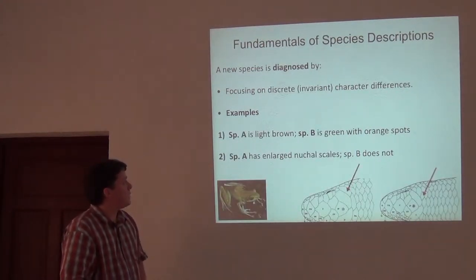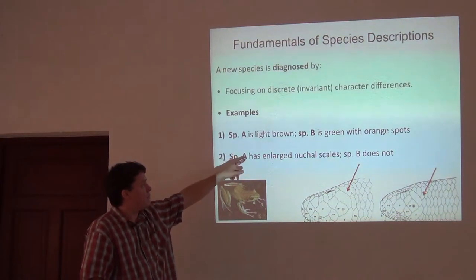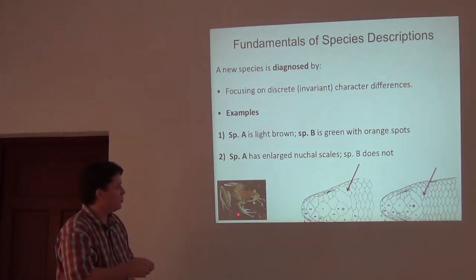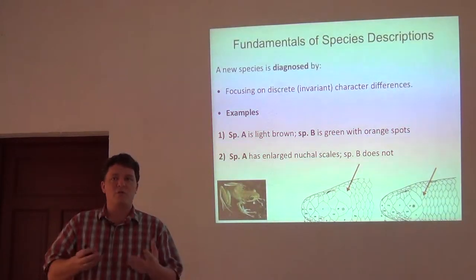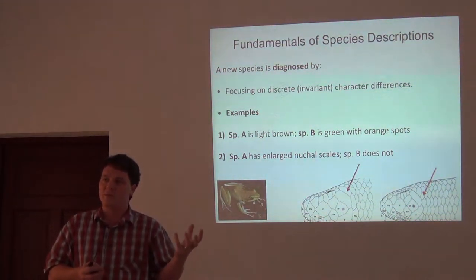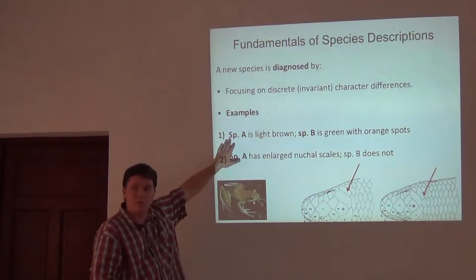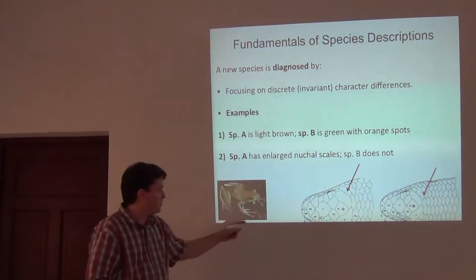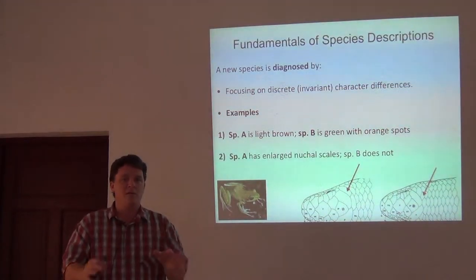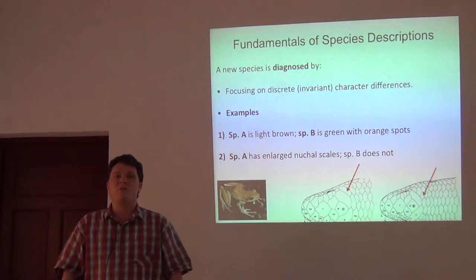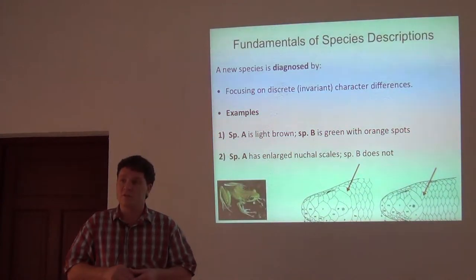Here are some other examples — other ways to quantify characters. Species A is light brown whereas species B is green with bright orange spots. There's nothing wrong with very brief color descriptions like that if they're really meaningful. If you have 25 individuals in one population and 25 in the other, and you can show that 25 specimens in one population are brown and 25 in the other are bright green with bright orange spots, that's a perfectly good character state difference — non-overlapping ranges of color variation. There's nothing about any one type of character difference that's better than any other type — anything that's real and fixed in a population is a perfectly good diagnostic character.